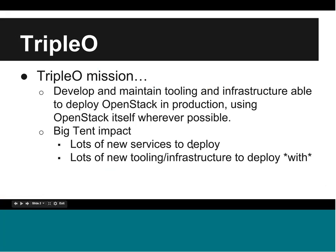I want to talk a little bit about the Triple O Project's mission and how that relates to some of the Big Tent governance changes that have gone on in OpenStack. Our mission has always been to deploy OpenStack in production using OpenStack itself wherever possible. In the Big Tent model, we have a lot of new services to deploy, and there's also a lot of new deployment tooling and infrastructure tooling that we can deploy with, making use of those OpenStack projects as they come into the Big Tent model.